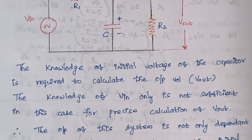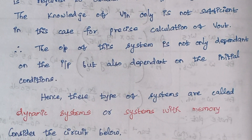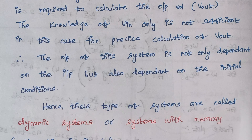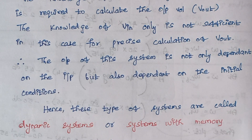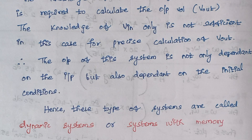The output of the system not only depends on the input voltage, but also it depends upon the initial conditions. The initial conditions refer to the state of the capacitor — whether it has any energy stored or is in neutral form. Hence these types of systems are called dynamic systems or systems with memory. Broadly, systems are classified into two types: static system and dynamic system.